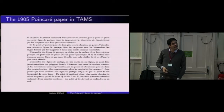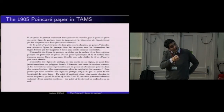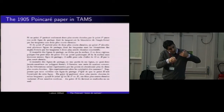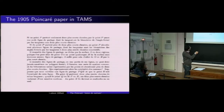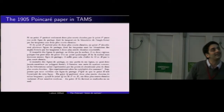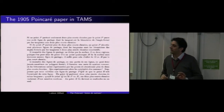Poincaré then studies what happens when you take a limit of points belonging to this tree, converging to an end of a leaf. He says: what do the extremities of the branches represent? At the ends of the leaves of the tree, the points will be conjugate points.